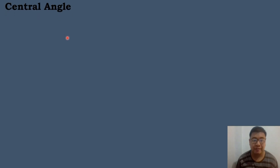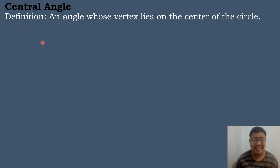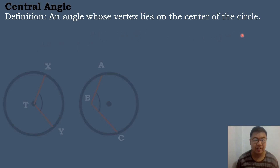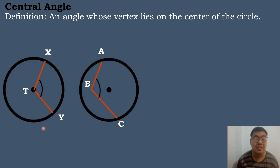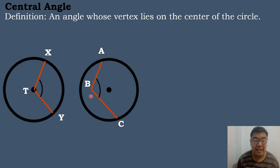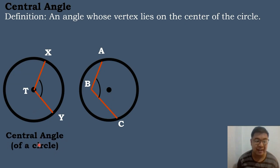Let's have the definition of a central angle. A central angle is an angle whose vertex lies on the center of the circle. The first circle has a central angle because the vertex is located at the center of the circle. The angle on the second circle is not a central angle because its vertex, point B, is not located at the center. So angle XTY is a central angle.